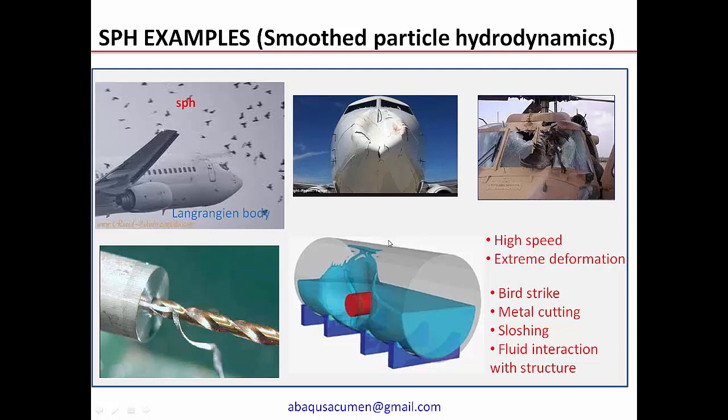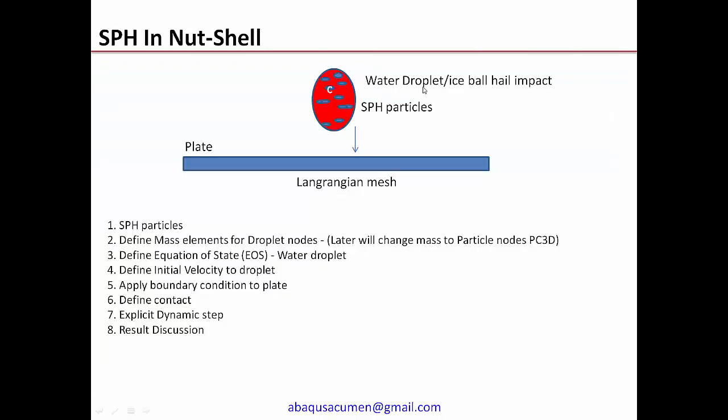Some definitions: SPH — Smoothed Particle Hydrodynamics — is a computation method for simulating fluid flow. It is a mesh-free Lagrangian numerical technique used to model problems where large distortions occur. The SPH method works by dividing the fluid into a set of discrete elements referred to as particles. These particles have a special distance known as the smoothing length, and you can assign properties such as density, temperature, and viscosity to represent a particular body in SPH.